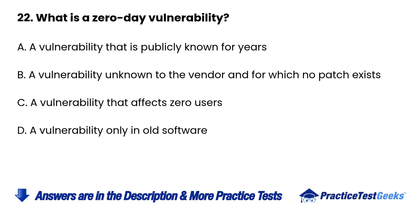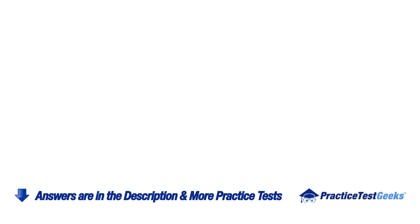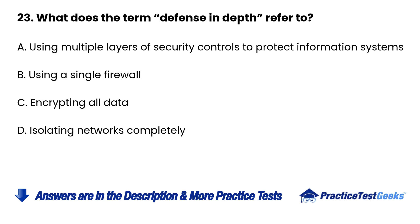Question 22: What is a zero-day vulnerability? A. A vulnerability that is publicly known for years. B. A vulnerability unknown to the vendor and for which no patch exists. C. A vulnerability that affects zero users. D. A vulnerability only in old software.